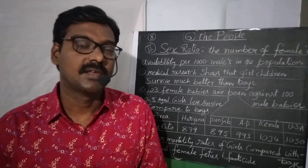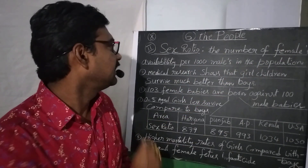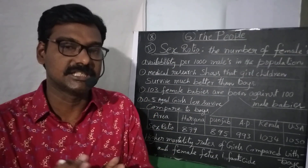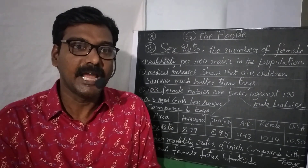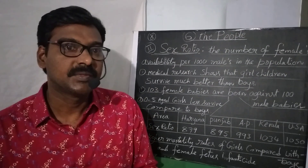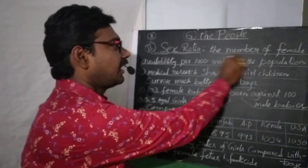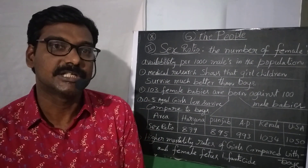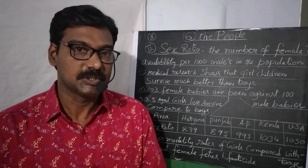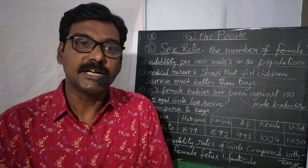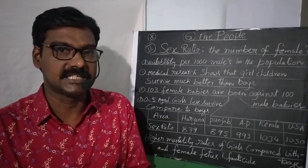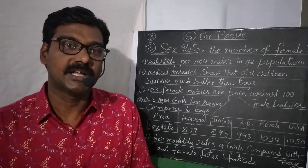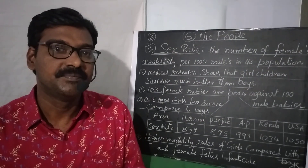Sex ratio refers to the number of females available per thousand males in the population. This is the gender difference — the difference between male and female found through the sex ratio. It is a very important social indicator through which we can find out the difference between male and female.